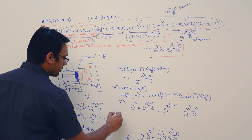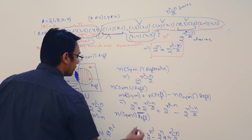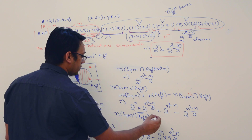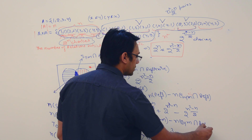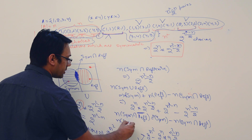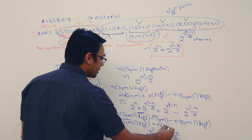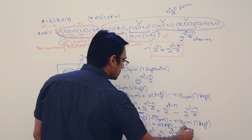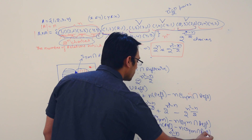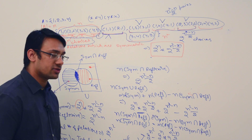The number of relations which are symmetric but not reflexive equals the number of symmetric relations minus the number of symmetric and reflexive relations. Similarly, the number of reflexive but not symmetric relations equals reflexive relations minus symmetric and reflexive relations. Next, let us look at the relationship between symmetric relations and irreflexive relations.